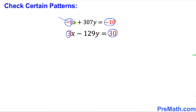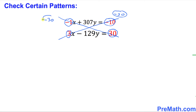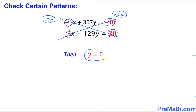We are going to cross multiply this way first. So negative 1 times 30 is going to be negative 30 on this side. And if we cross multiply the other way around, we are going to get 3 times negative 10, which is negative 30 as well. As long as these two numbers are the same, then we are going to have y equal to 0, always.